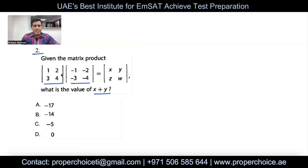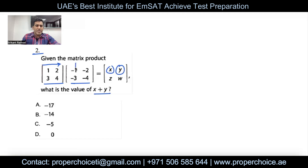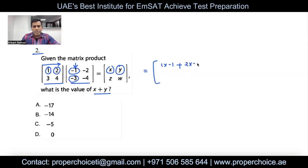Here I'll do it without a calculator — either way is fine. I only need the values of x and y, not all entries. When multiplying matrices, the rule is: the row of the first matrix is multiplied with the column of the second matrix. So the first element of the result is: first row, first element times first column, first element — that's 1 times negative 1, plus second element of first row times second element of first column, which is 2 times negative 3. This entire result is x.